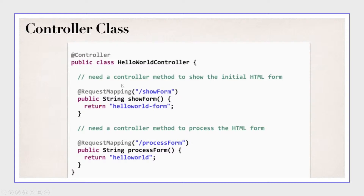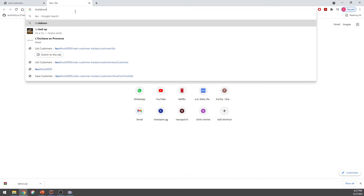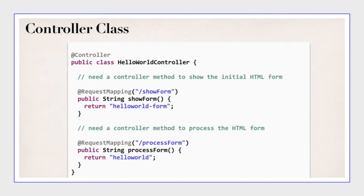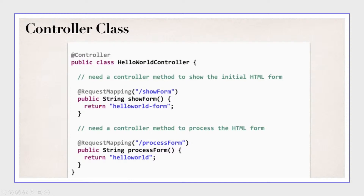We have some controller — this is a HelloWorldController. We're going to request map to /showForm. That means when we go to our browser and type something like localhost, whatever — and our app is called WebCustomerTracking — when we type /showForm, it will call this function that was made here. So we requested a mapping to this URL to this function.